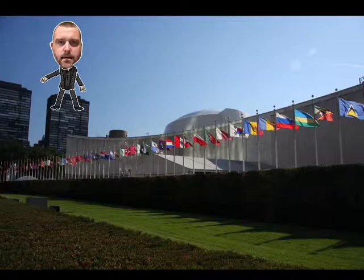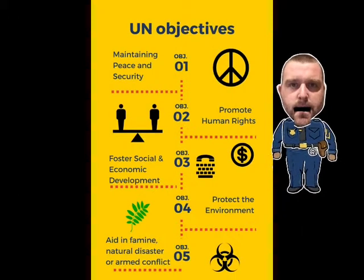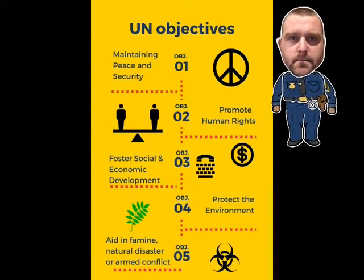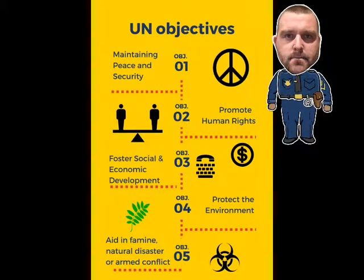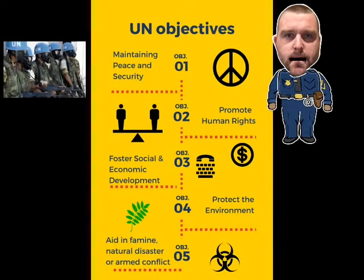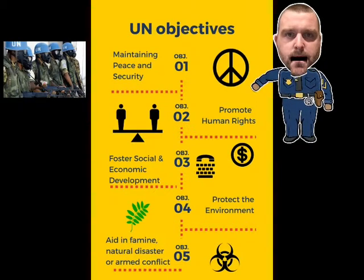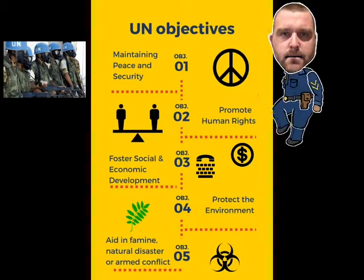The UN really has five main objectives. The first one is maintaining peace and security. They'll usually do this through peacekeepers, where certain nations will give volunteer soldiers, called peacekeepers, to different conflicts around the world.